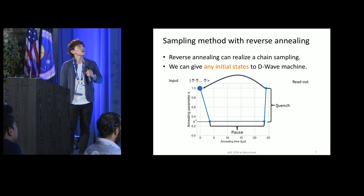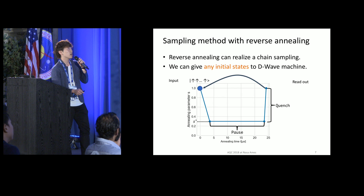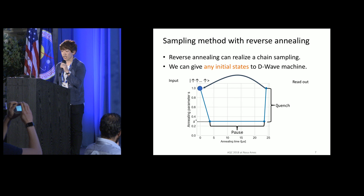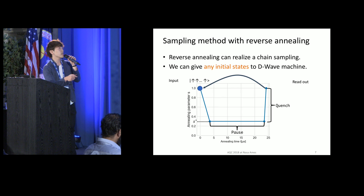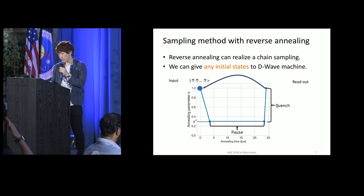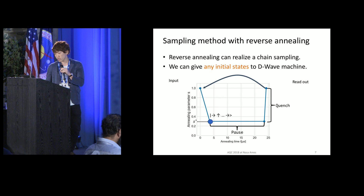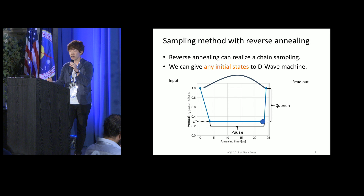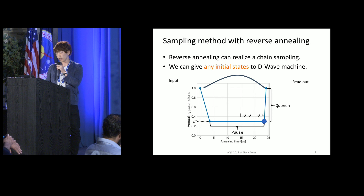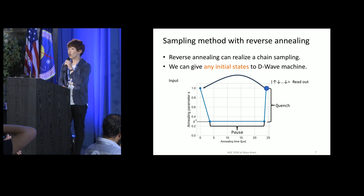This is a sampling method with reverse annealing. This is a typical reverse annealing schedule. In the reverse annealing, we can set any initial classical states. In this example, we set the input vector as all spins up. And then we reduce the annealing parameter S. After that, we pause the system and evolve it for some time to equilibrate the system. And after that, we suddenly increase the annealing parameter S from the target S to S equal 1. This is called a quench. By doing the quench, we can retain the effect of the transverse field.